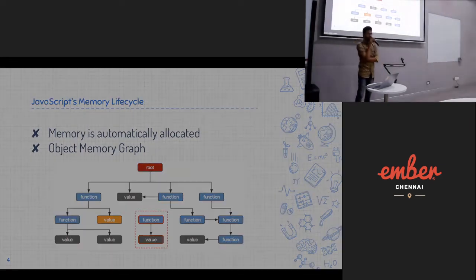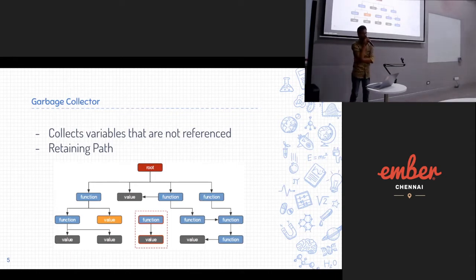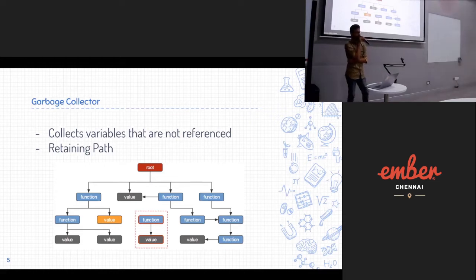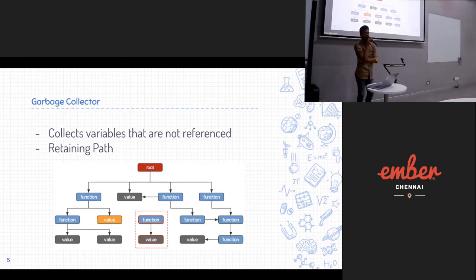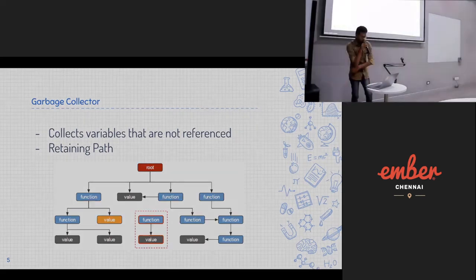The red-shaded square has no reference to the root of the graph, so it will be automatically collected by the garbage collector. The garbage collector is JavaScript's memory management system — it automatically removes memory allocated to variables. The value in the yellow-shaded rectangle will NOT be collected because it still has a reference in the function.